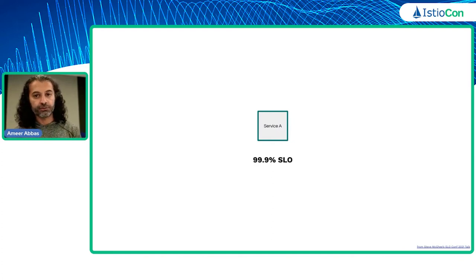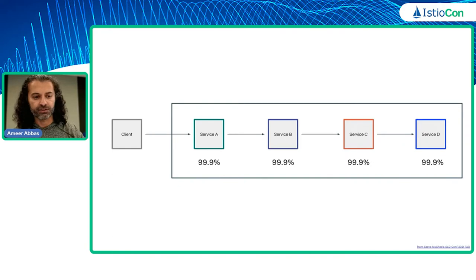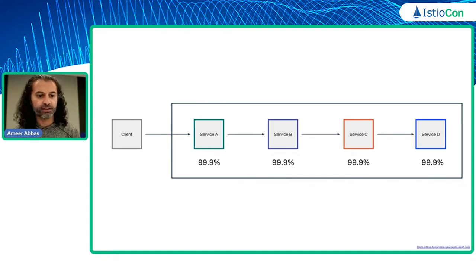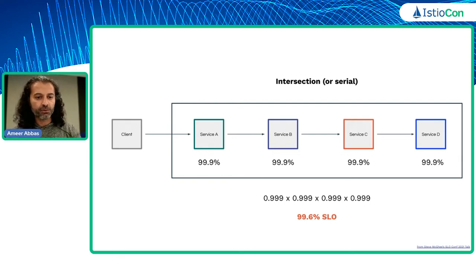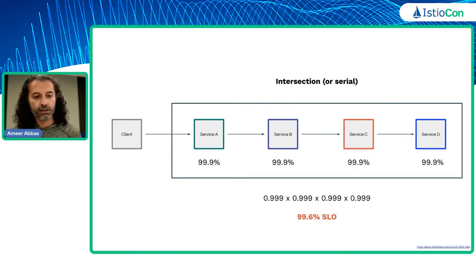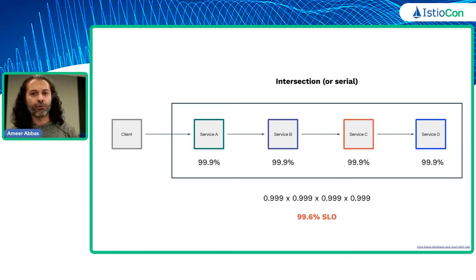Let's make it less abstract. Say a service has an SLO of 99.9%, meaning it's available 99.9% of the time. A real-world multi-service scenario: client talks to service A — could be a front end — talks to B, C, D. For a request to succeed, all services must be up. Using that same math, multiply the SLOs together and you get an aggregate SLO of 99.6%. I call this the bad math — the serial or intersection model — and it's something we want to avoid or improve.